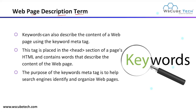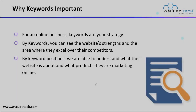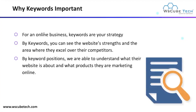In the case of the web page description term, keywords can also describe the content of a web page using the keyword meta tag. The tag is placed in the head section of the web page HTML. If you are using WordPress, you can use your theme editor — under the header.php option — to add the tag, or you can insert a plugin such as 'Header and Footer' to paste that particular tag. The purpose of the keyword meta tag is to help search engines identify and organize web pages.